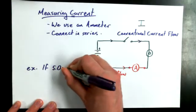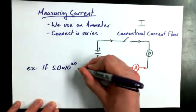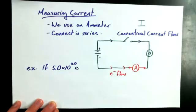If 5.0 times 10 to the power of 20 elementary charges, you know, that could be protons if we're talking about conventional current flow, but we all know in our hearts that they're really electrons. E stands for elementary charges, not electrons, but we know it's really electrons if we're talking about flowing electricity.